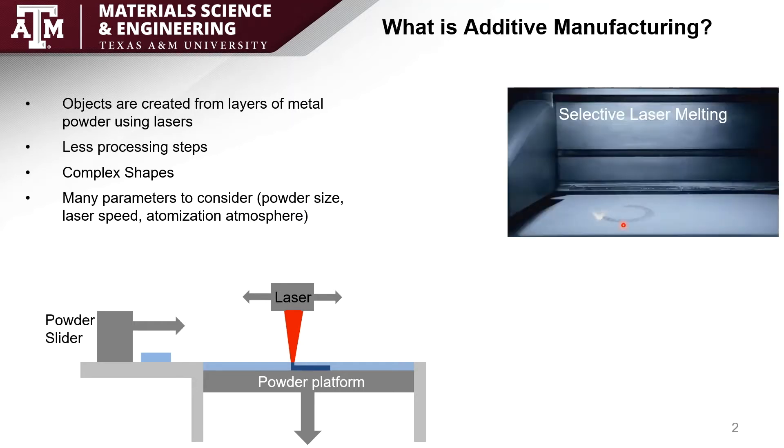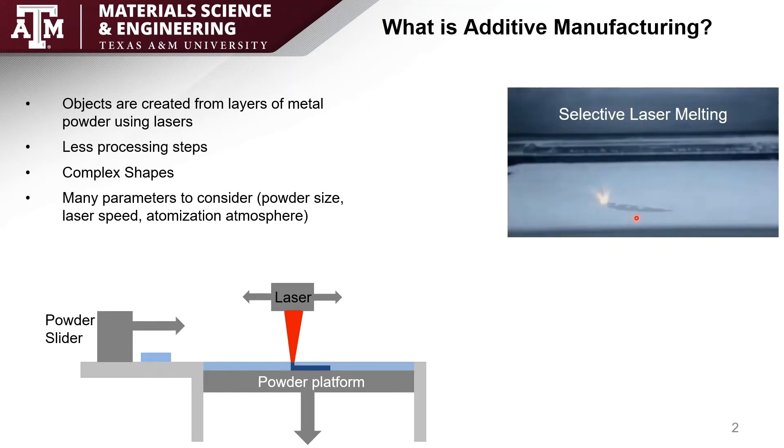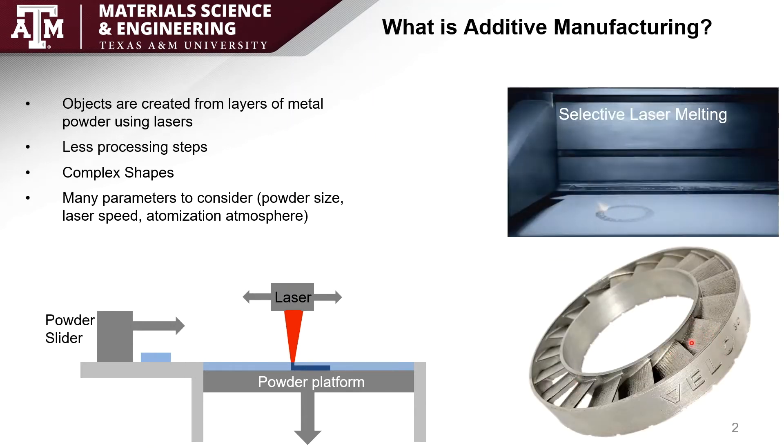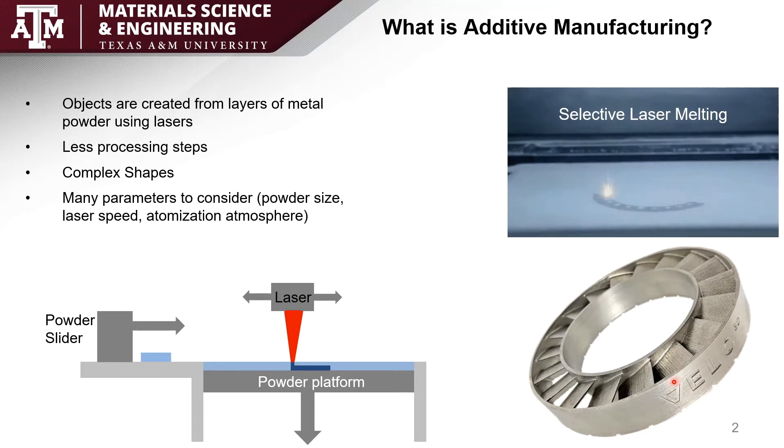This little gif here shows SLM and you can see it's burning the layer and adding a new one on top and repeating. And this is what a normal product would look like. You can see there's a lot of little grid lines here from each layer.